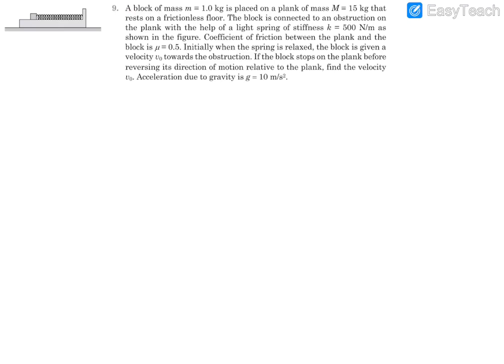Question number nine: a block of mass 1 kg is placed on a plank of mass M, which is further placed on a frictionless floor. The block is connected to an obstruction on the plank with a light spring of known stiffness constant k. The coefficient of friction between block and plank is 0.5. Initially the spring is relaxed, then a velocity v₀ is given to the block towards the obstruction. The block stops before reversing direction relative to the plank. We need to find v₀, using g = 10.